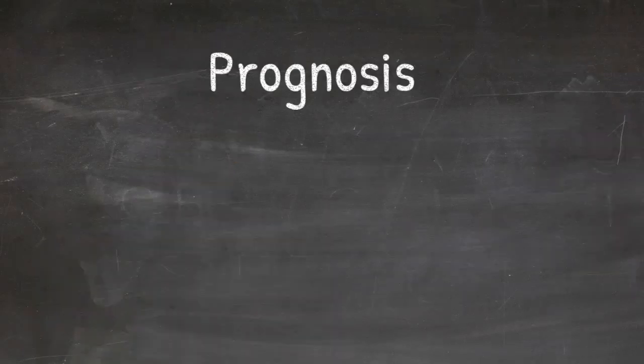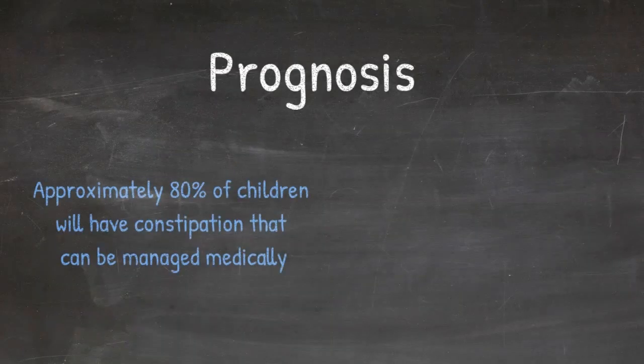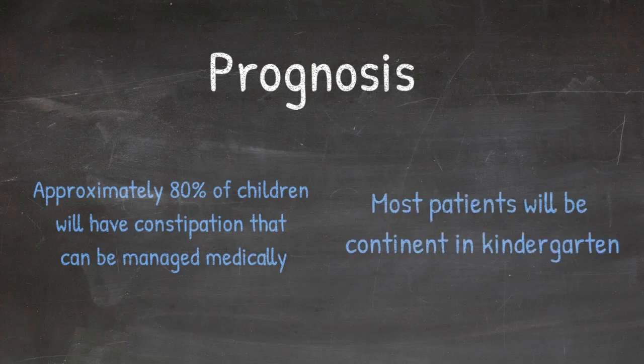It's in the long-term prognosis for these patients. I do mention that about 80 percent of kids with Hirschsprung's disease are constipated and will need some kind of management. So assuming that the operation's been done well and that there's not any transition zone or strictures, we expect that most of the patients are going to do very well and be in kindergarten, socially continent.